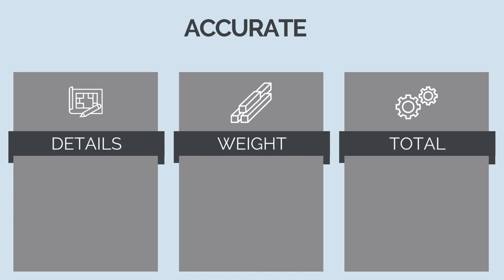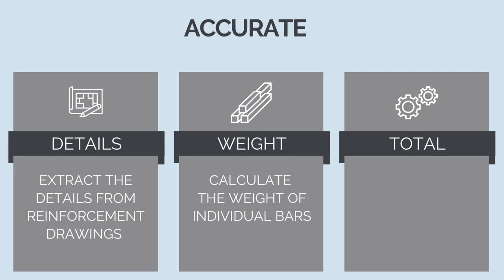The basic method to follow is step 1, extracting details. From the reinforcement drawings or bar bending schedules, extract the number, diameter, and length of each type of reinforcing bar. Step 2, calculate the weight of individual bars. The weight of a reinforcing bar is length by diameter squared by pi divided by 4 by the density of steel. This is approximately...